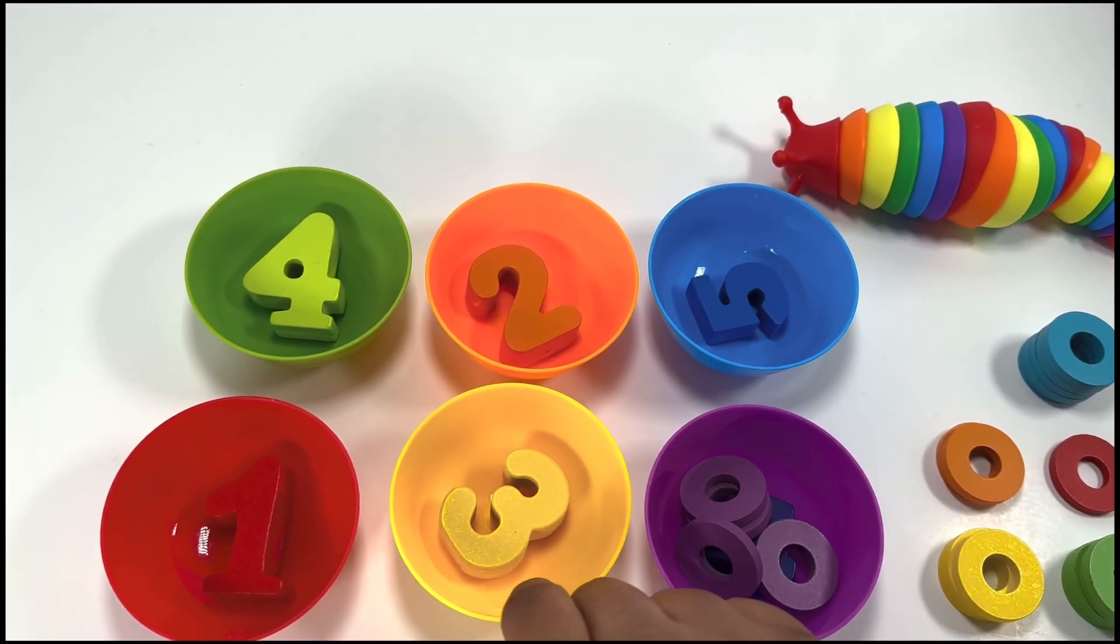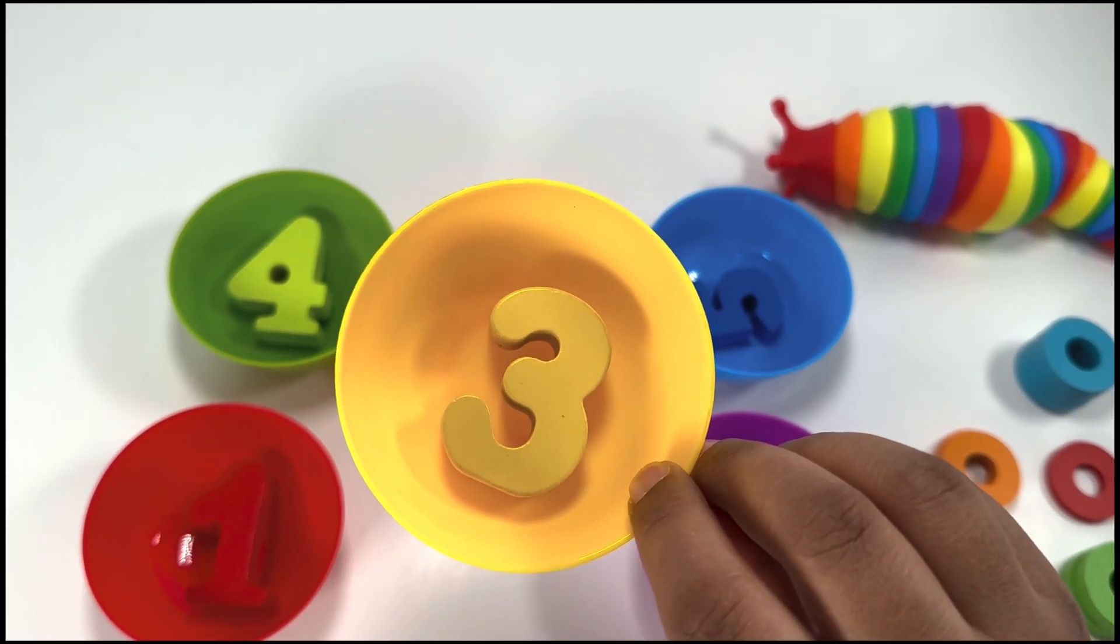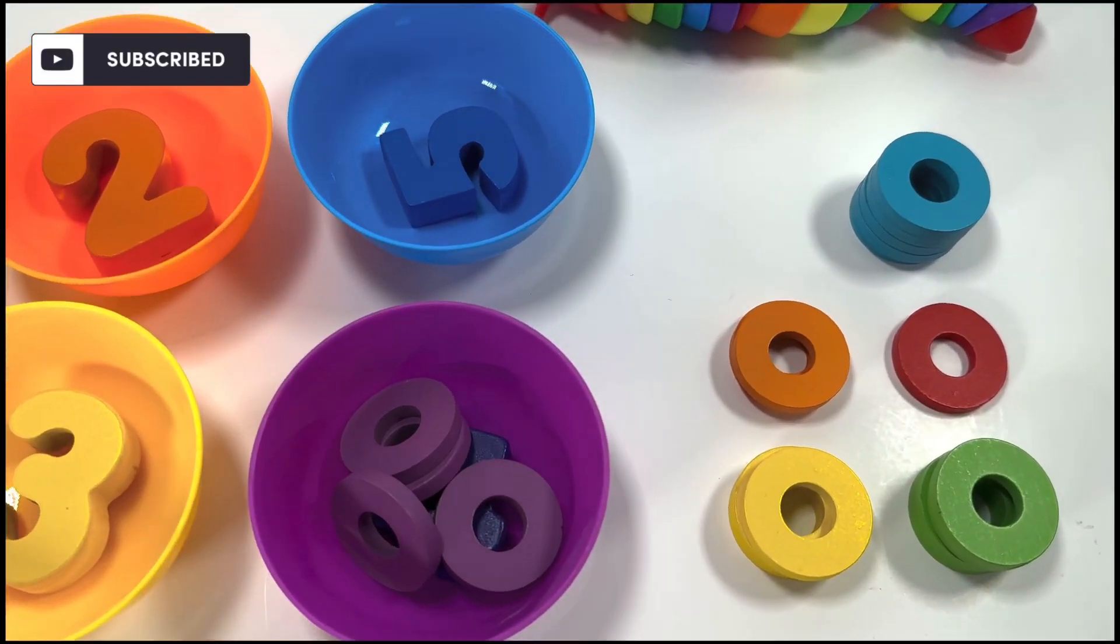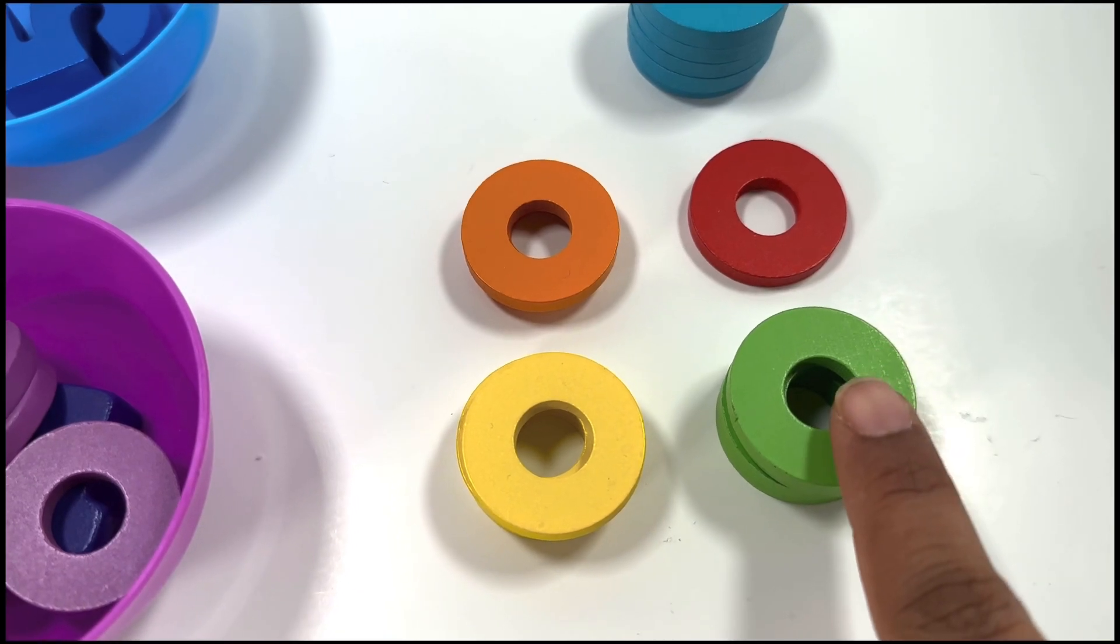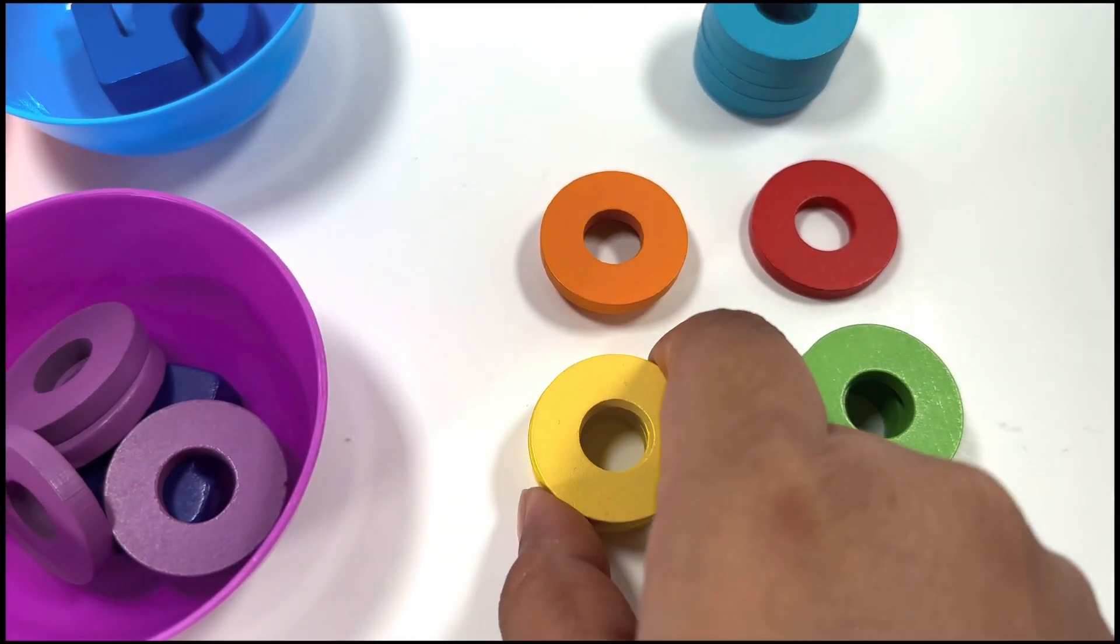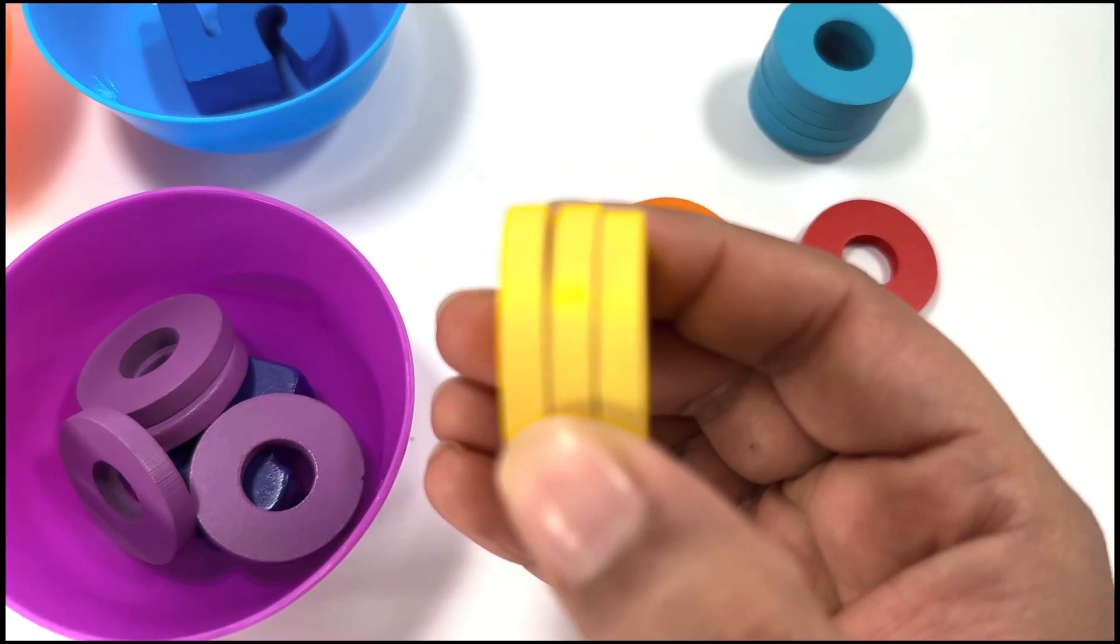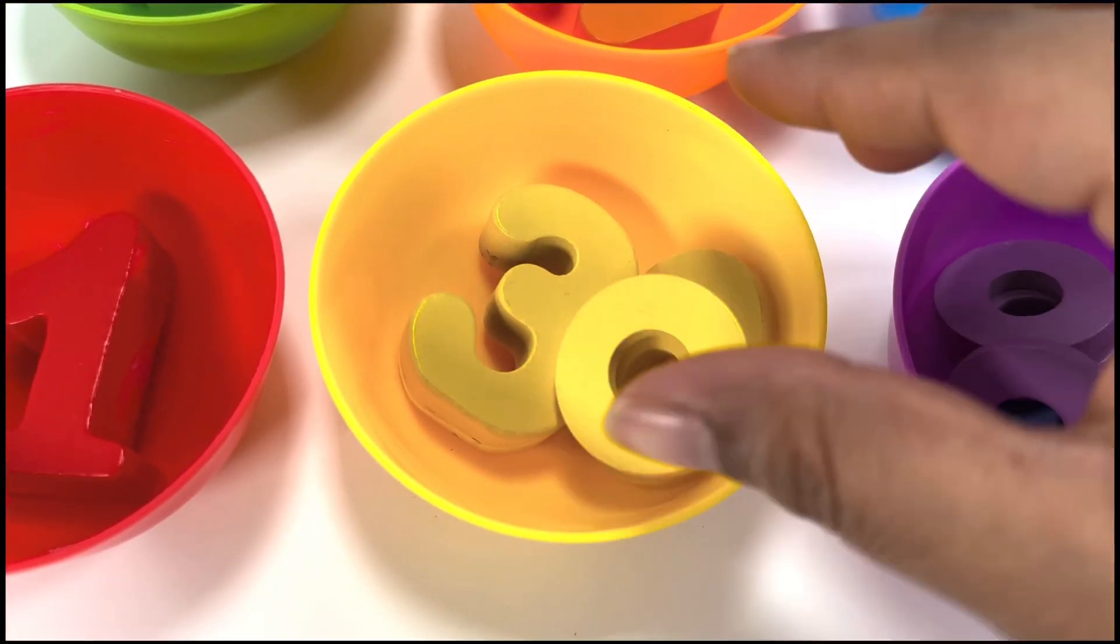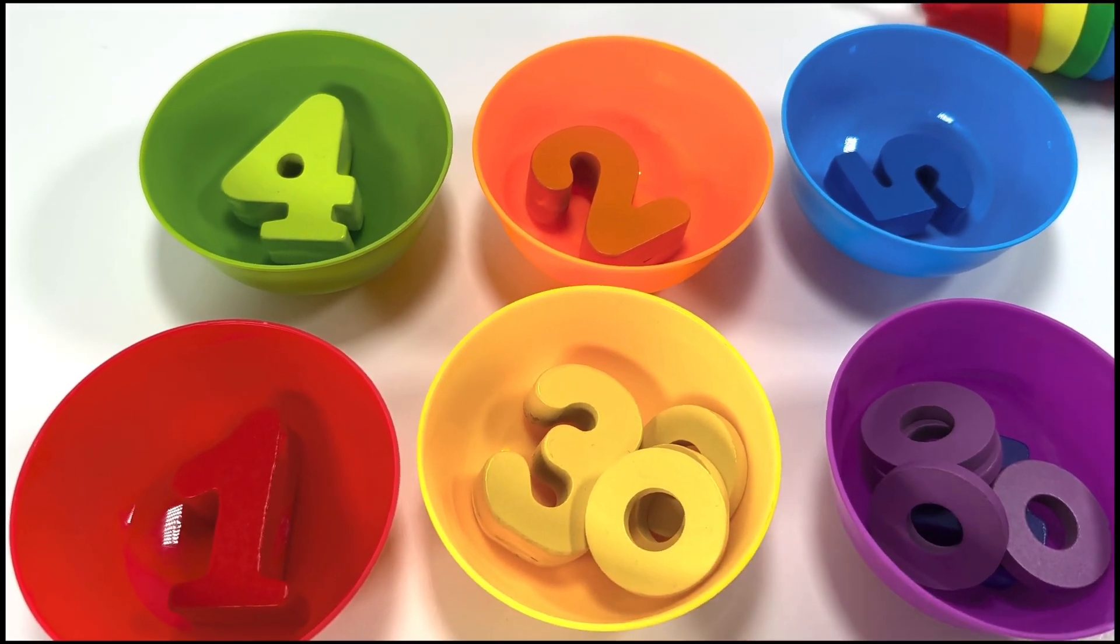What about the yellow bowl? Which number do you see? Number three. That's right. Do you see yellow color over here? Is it this one? It's this one. You're right. How many rings do we have? One, two, three. Three rings in the yellow number three bowl.